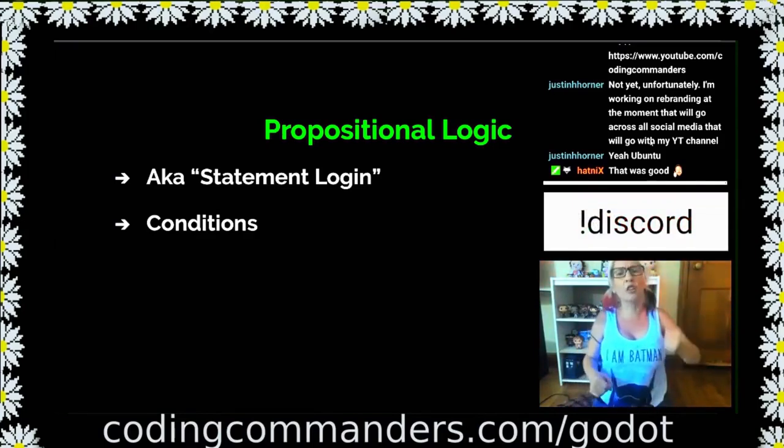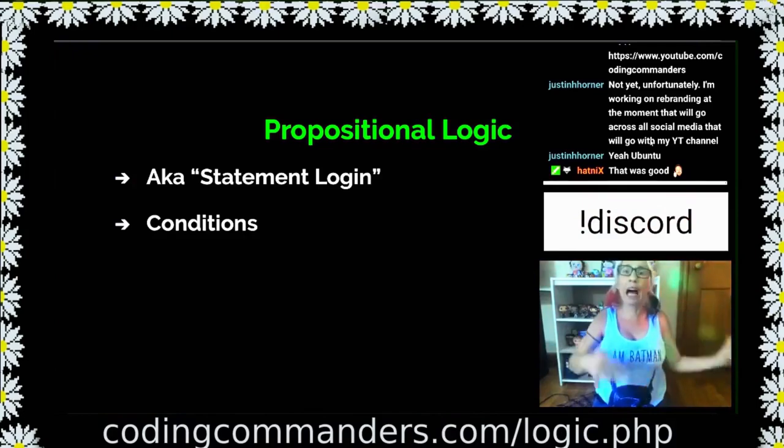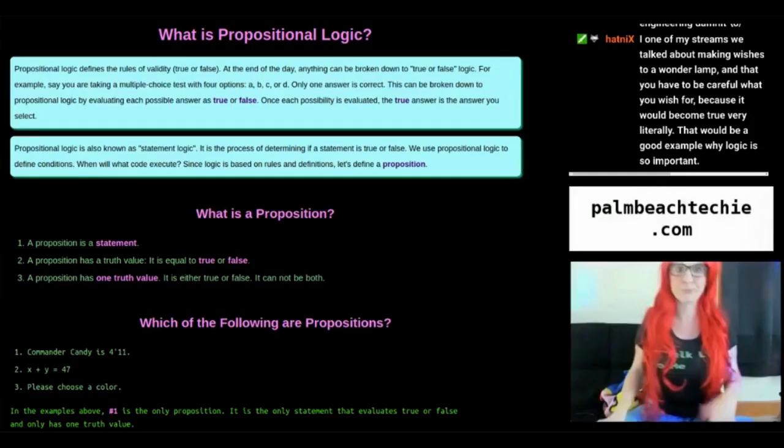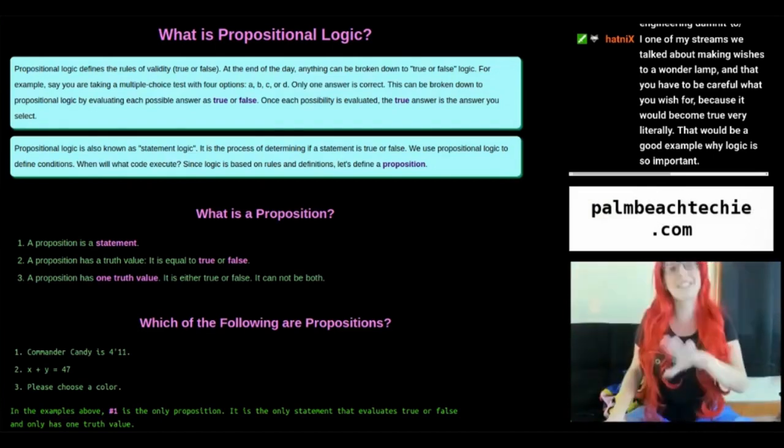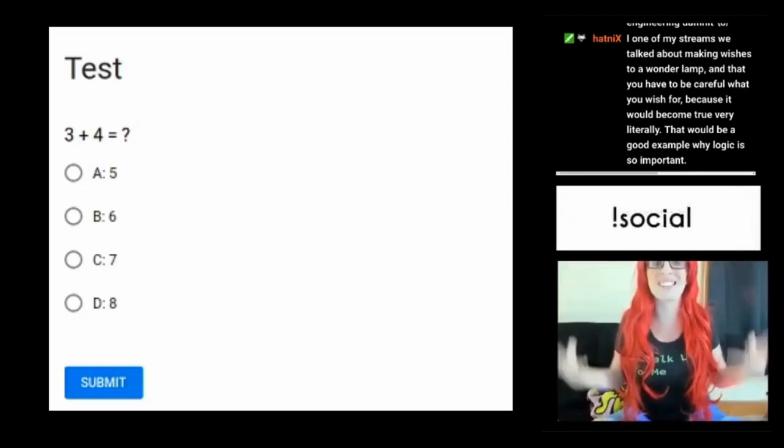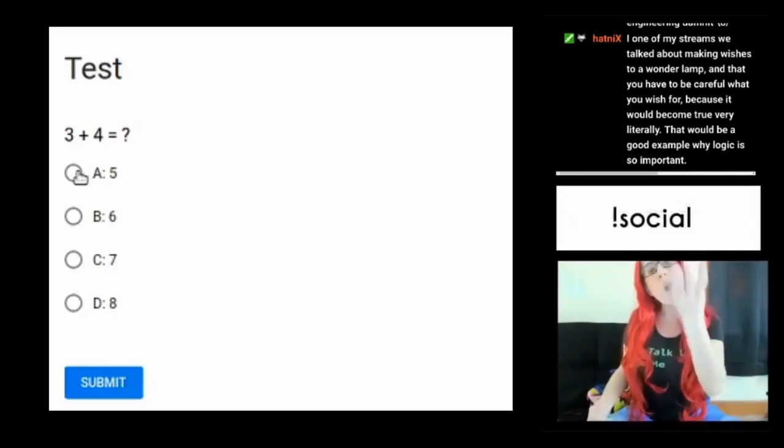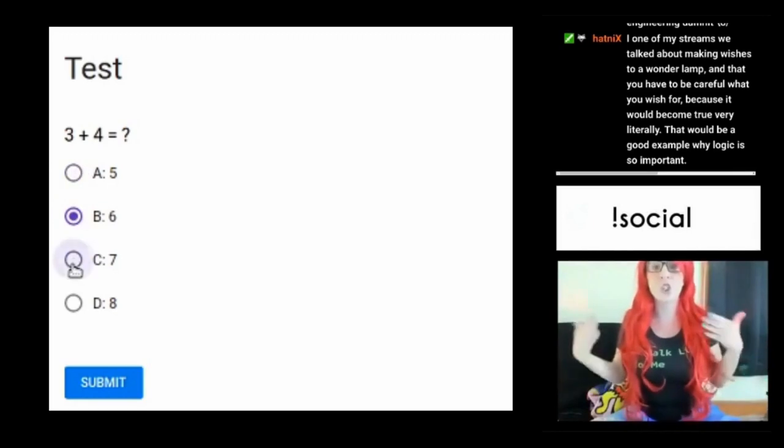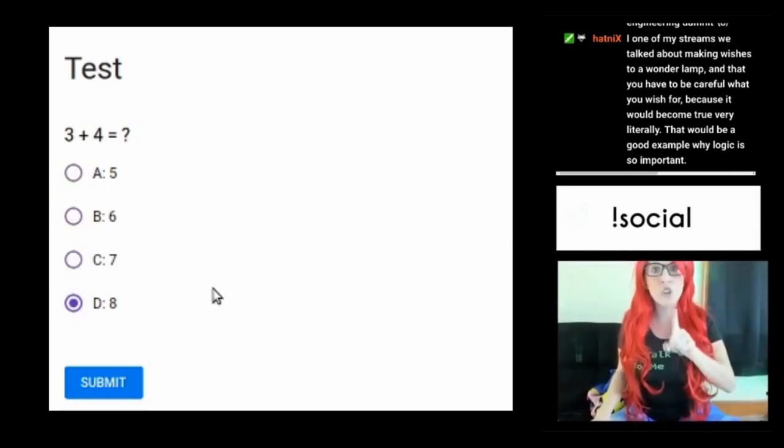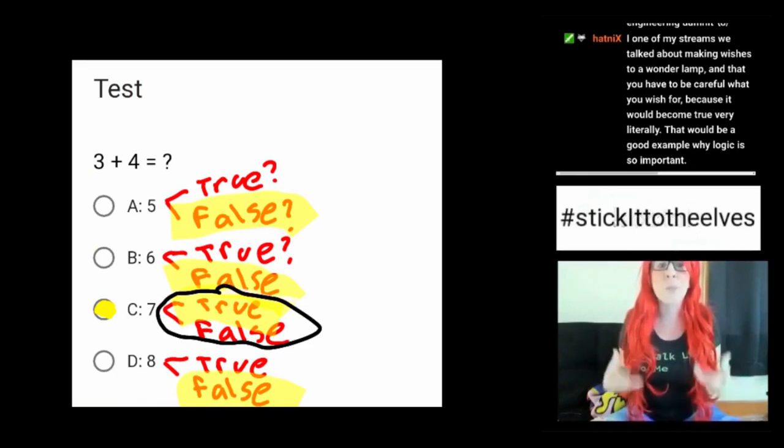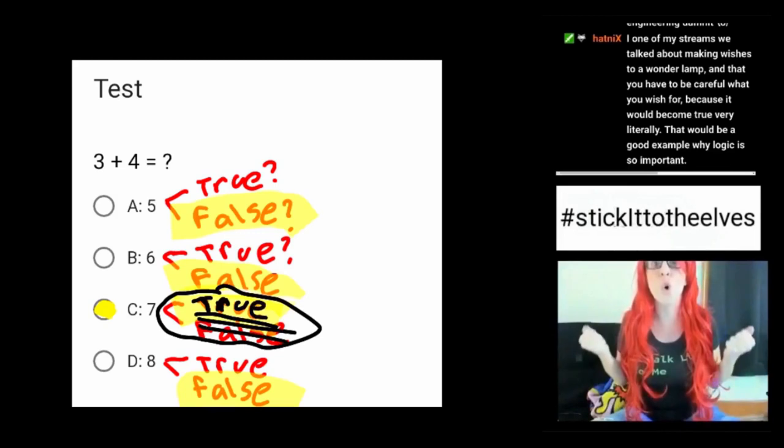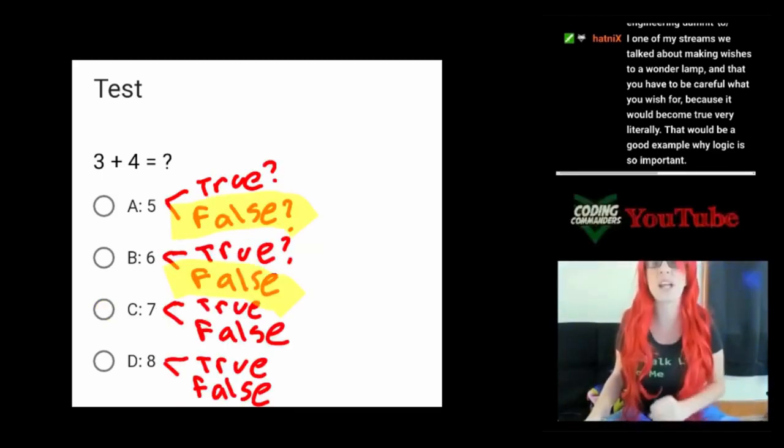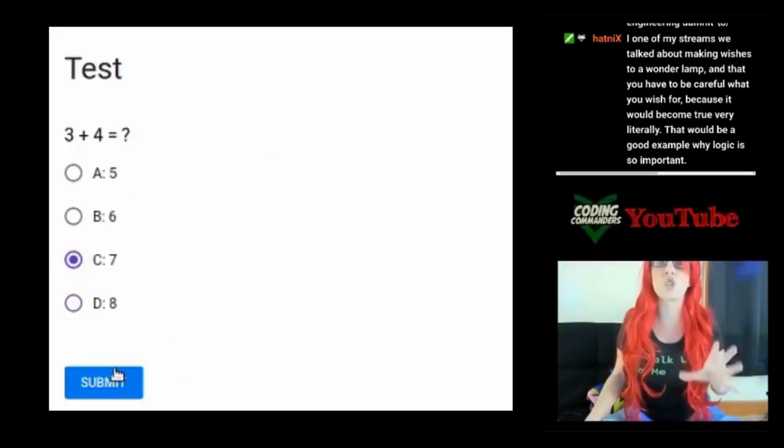Based on certain conditions, things will either happen or not happen. At the end of the day, anything can be broken down to true or false logic. For example, say you're taking a multiple choice test with four options A, B, C, or D. Only one answer is correct. This can be broken down to propositional logic by evaluating each possible answer as true or false. Once each possibility is evaluated, the true answer is the answer you select.